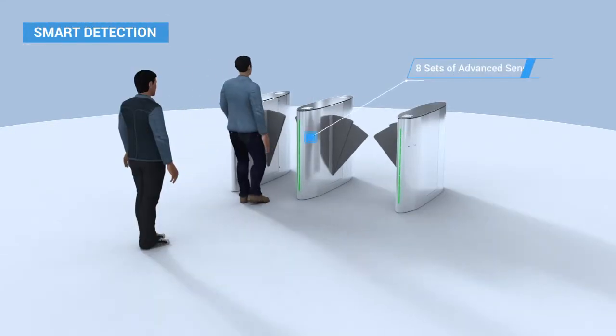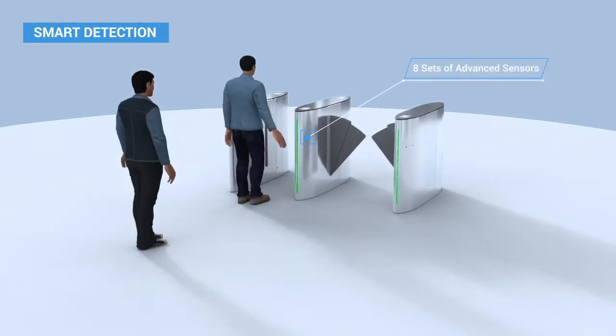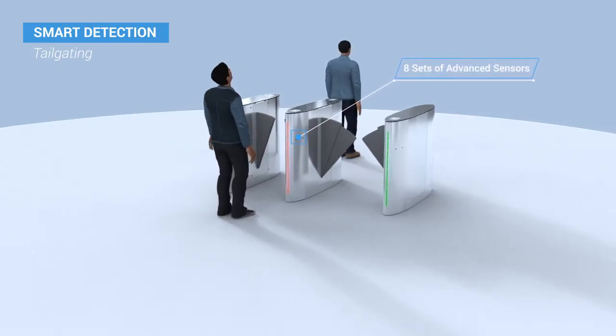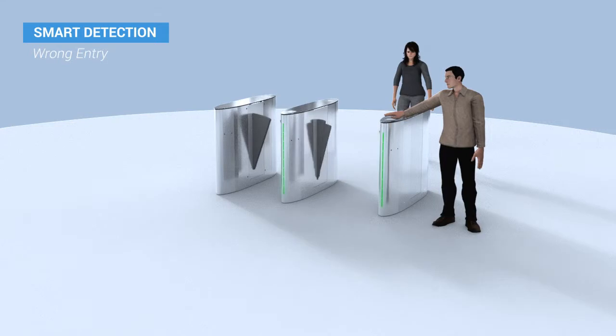Impact detection helps prevent unauthorized entry attempts such as tailgating and wrong entry.